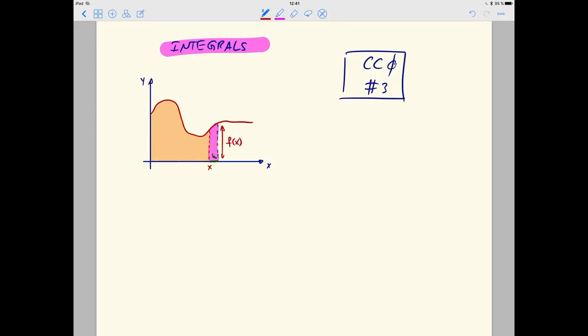In other words, the height of the graph is the area's rate of change. But be careful, this means that whenever f is negative the area counts as negative also.